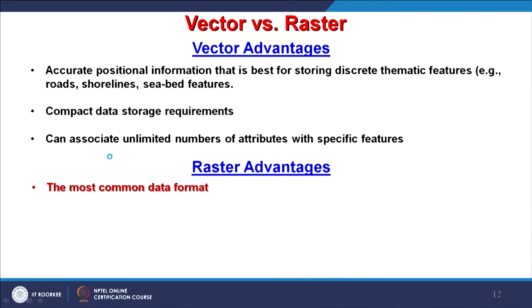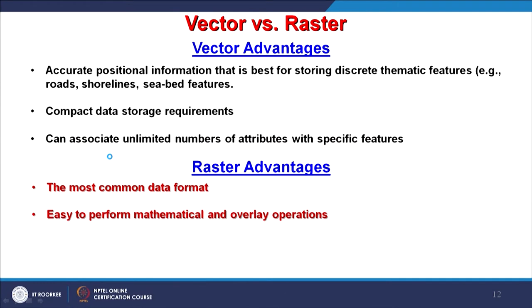Vector data can theoretically store an unlimited number of attributes — each point, line, or polygon can have hundreds of attributes. One earlier example showed about 20 attributes associated with each point for hydro potential sites. In the case of raster, only one attribute per cell is possible — that is the biggest limitation. In the future this may change, but currently multiple attributes can only be achieved through different raster layers — one for elevation, one for pollution, and so on.